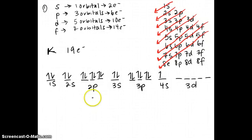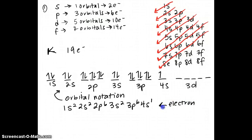This is my orbital notation that I just wrote. If I want to write the electron configuration, I just count up how many electrons are in each of these, and I write 1S2, 2S2, 2P6, 3S2, 3P6, 4S1. And this is my electron configuration.